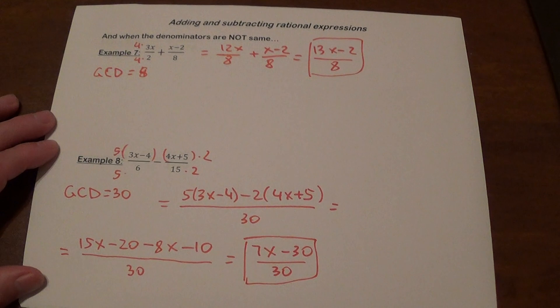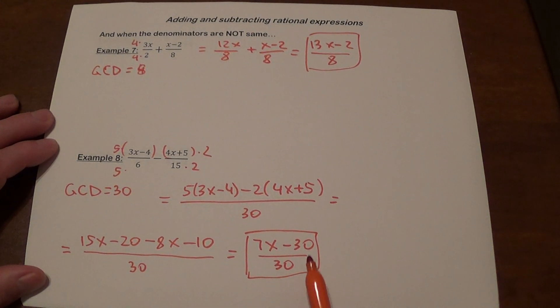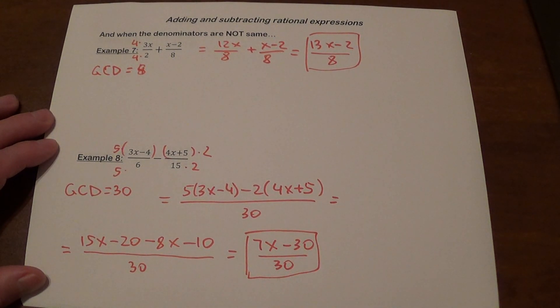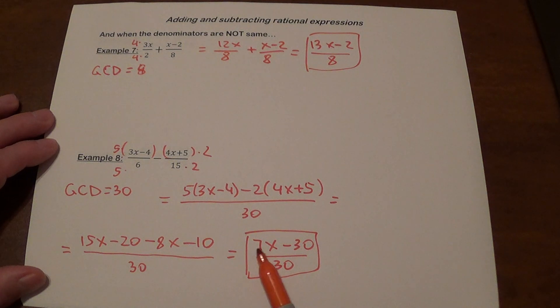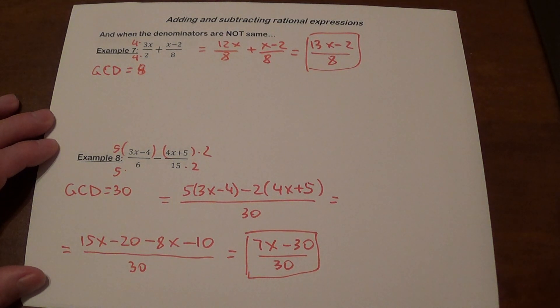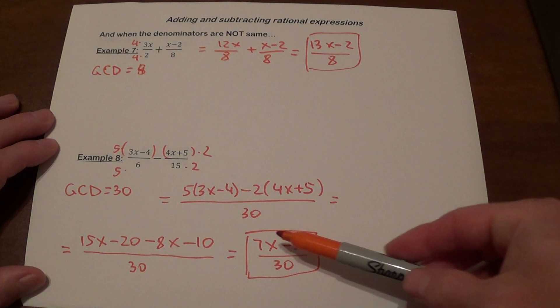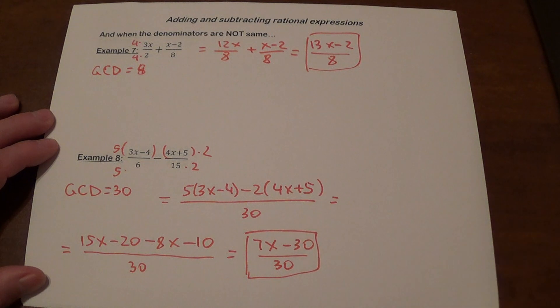A common question with problems like that: can we just divide the 30s? The answer is no, you cannot. Because if you're going to divide by this number, you've got to divide every single term in the numerator. So if you want to do it, you have to divide 7x by that number as well.